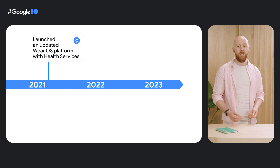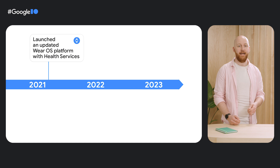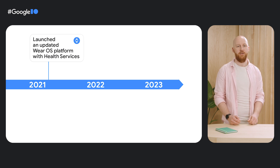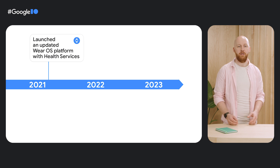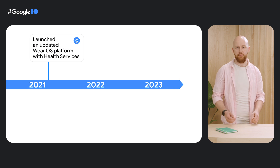However, in the past few years, there's been a lot of exciting progress to make this easier. In 2021, we launched a new version of Wear OS, built jointly with Samsung, and have brought several new devices onto the platform, including Google's own Pixel Watch. We also launched Health Services to allow Wear OS apps to track many health and fitness metrics, such as heart rate, steps, sleep, and more, using a power-efficient and consistent API surface.